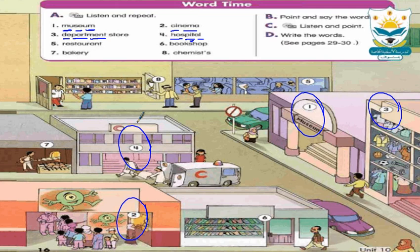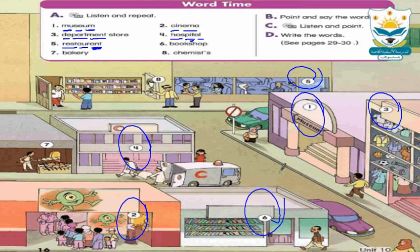Number five: restaurant — divide it with me: R-E-S-T-A-U-R-A-N-T. Note: the last three letters in restaurant are 'ant,' meaning نملة. Restaurant means المطعم. This is a restaurant. Number six: book shop — book shop means مكتبة لبيع الكتب. Spelling: B-O-O-K-S-H-O-P. This is a book shop.